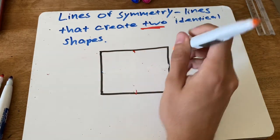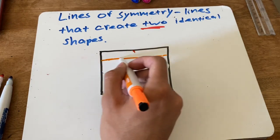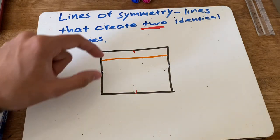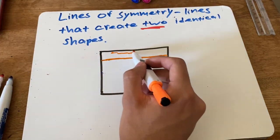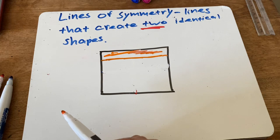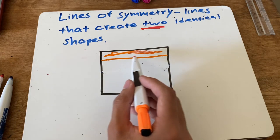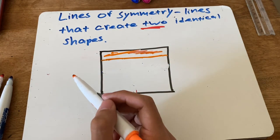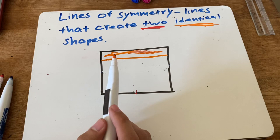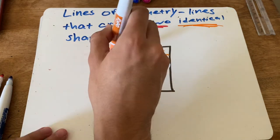What if I cut it like this with the orange line — is this a line of symmetry? No, it is not, because this top side is not the same size as the bottom part. The orange part looks more like a rectangle and the other part looks like a bigger square. This orange line does not cut the square into two identical pieces. Remember, the keyword is identical — identical means the same.